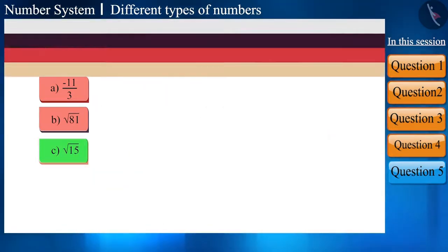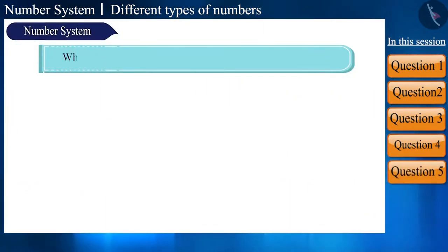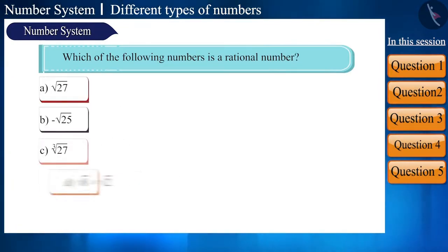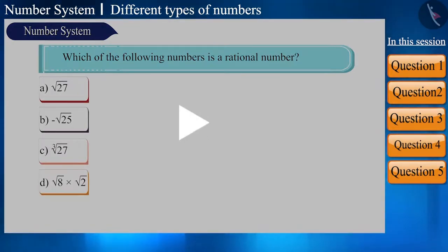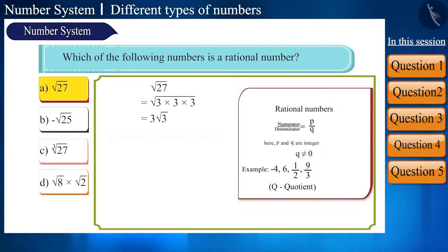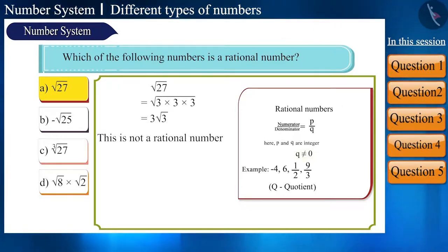Now let's take another similar question: which of the given numbers is a rational number? You can also pause the video to think about the answer. Let's see the first option: the square root of 27 is not a whole number, so it is not a rational number.